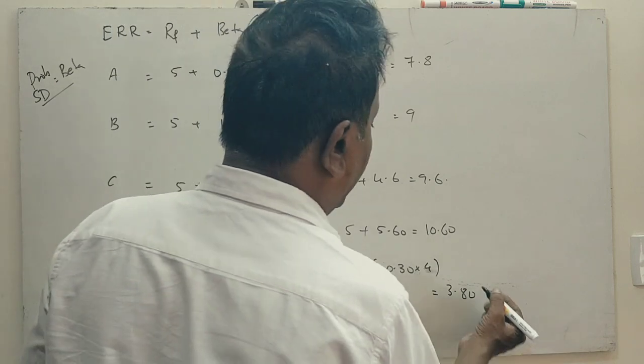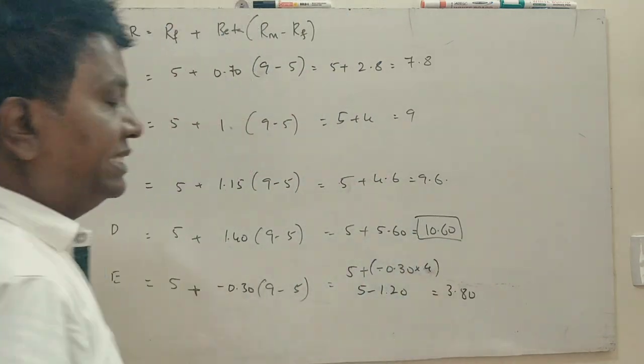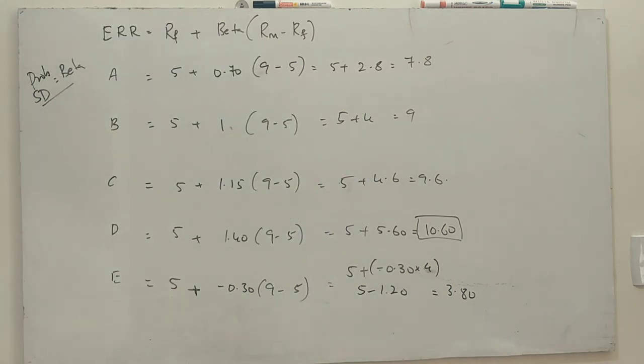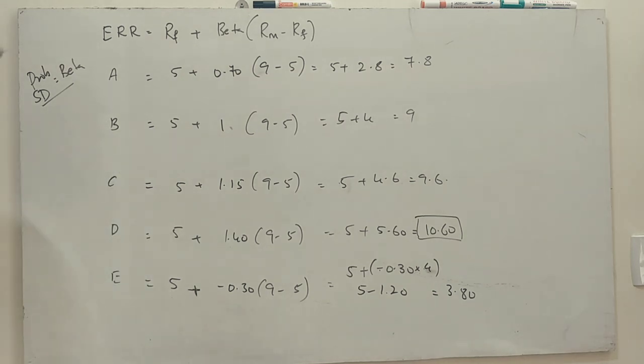This is 10.60 is giving the highest return. So, expected rate of return is 10.60 out of the 5 portfolios. It is now portfolio selection. Portfolio selection, 3rd chapter, is the question.